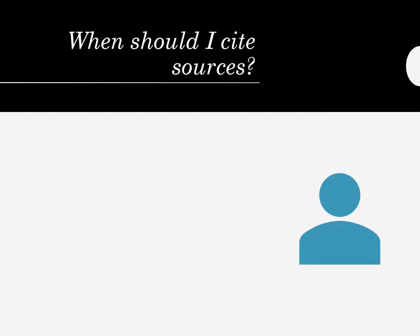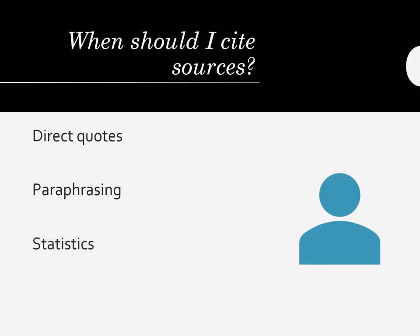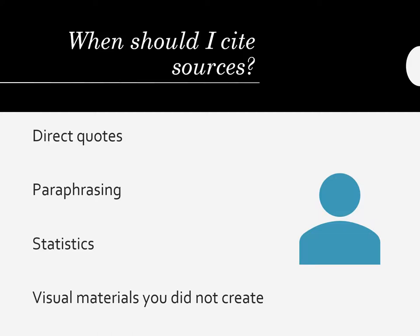Understanding how to integrate a variety of evidence into your speech is one thing. Understanding the importance of citing your sources is another, especially in a persuasive speech. Whether you're quoting an expert from an interview, paraphrasing difficult-to-understand research, or using statistics, you want your audience to know they can trust that you've done proper research. Not to mention, you should give credit where credit is due, including any visual materials like pictures, charts, or graphs. It's your ethical responsibility as a speaker to acknowledge the work that others have done to create the research you're using in your speech.